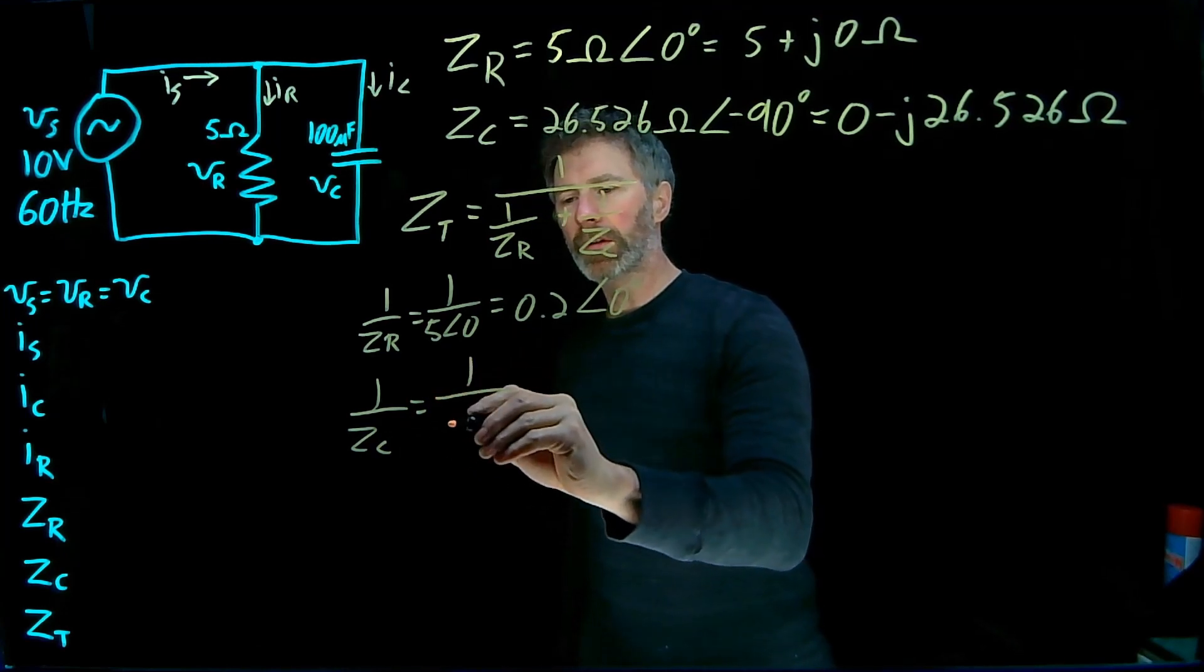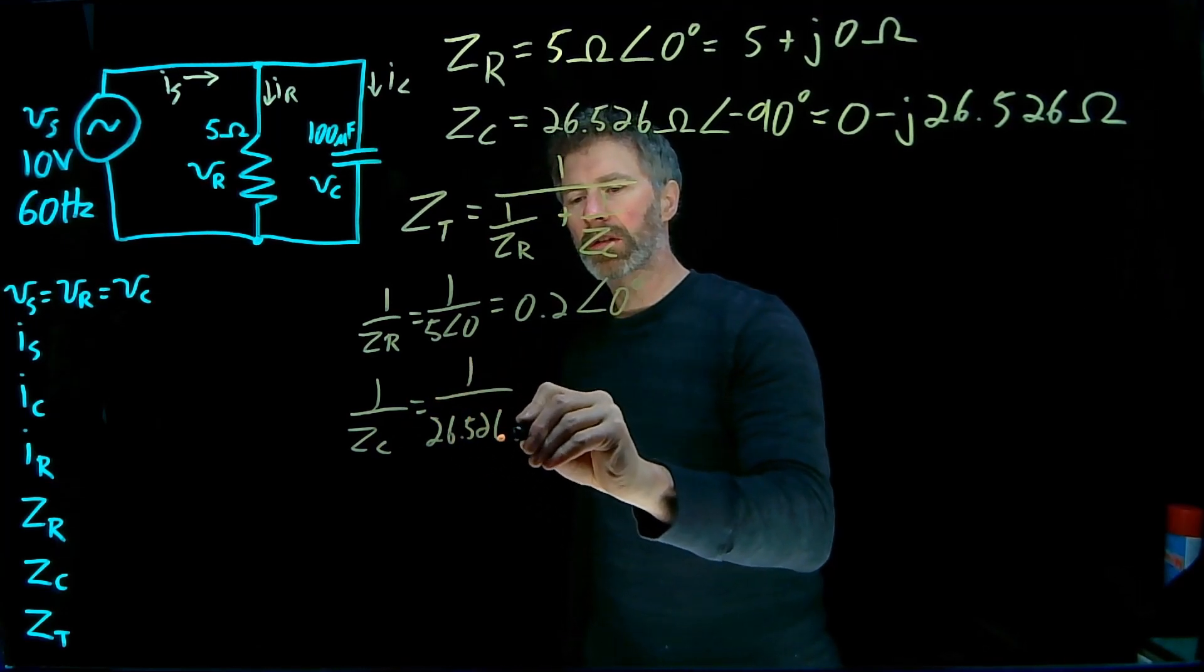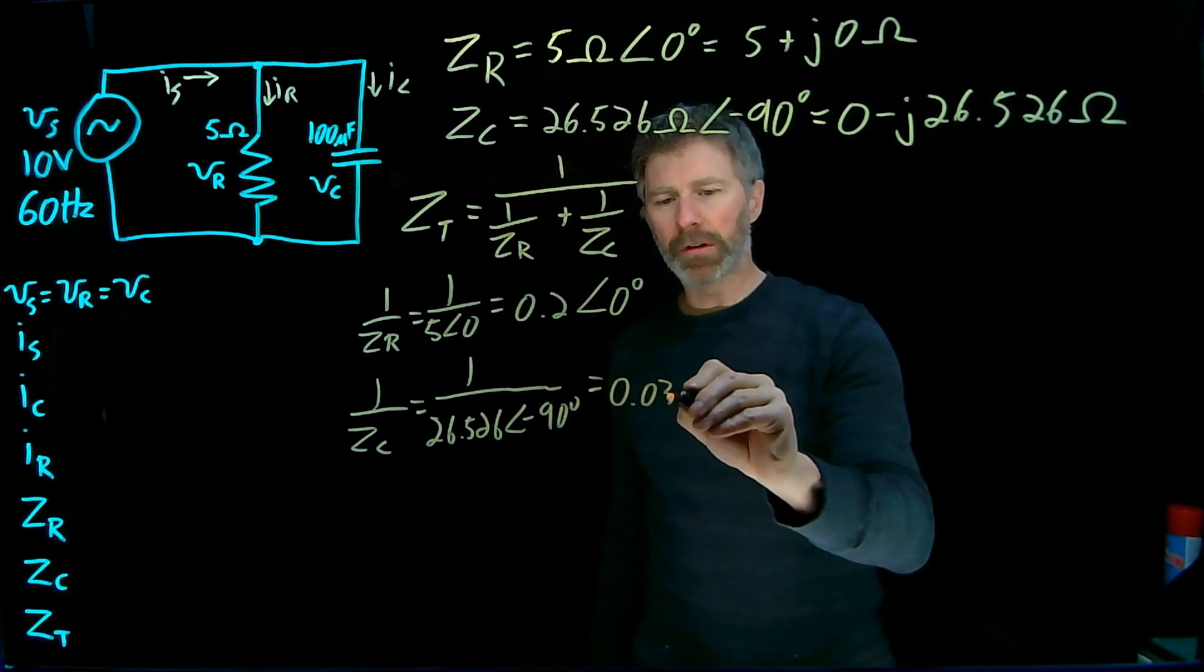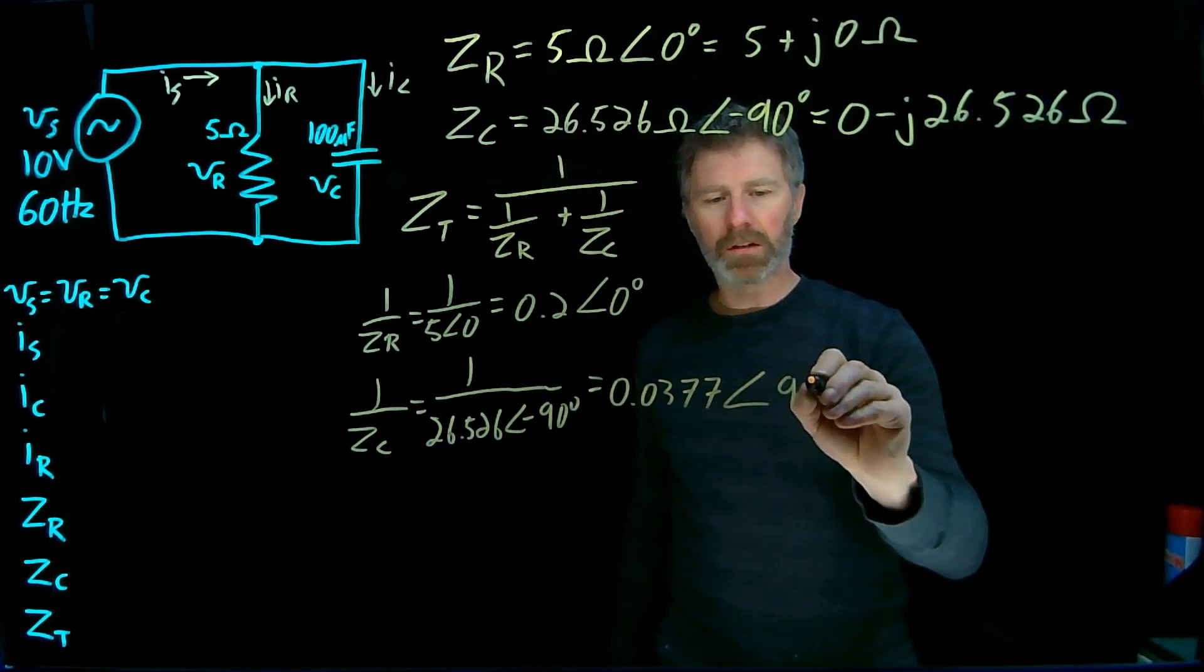And 1 over the impedance of the capacitor, that's 1/(26.526 ∠-90°), equals 0.0377 ∠90°.